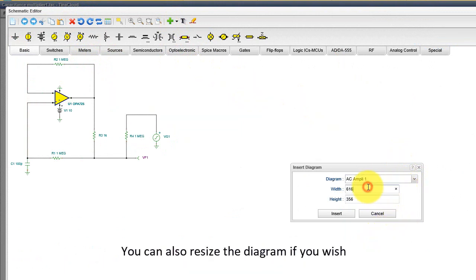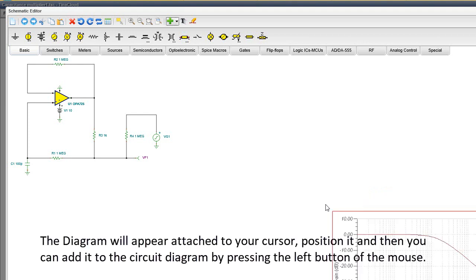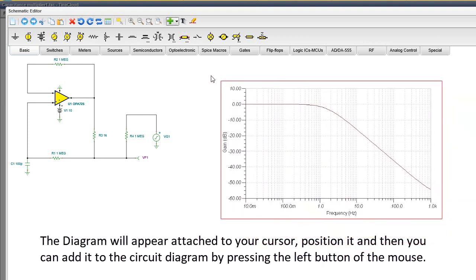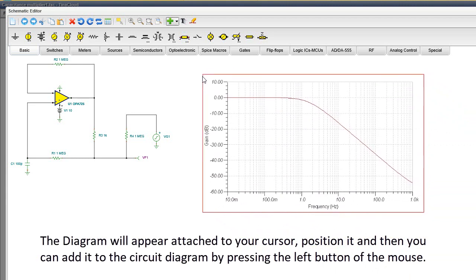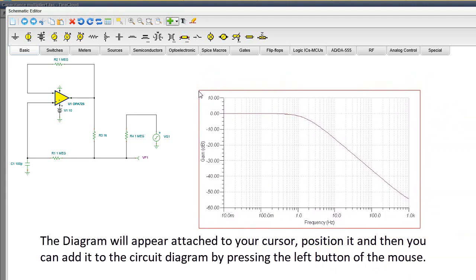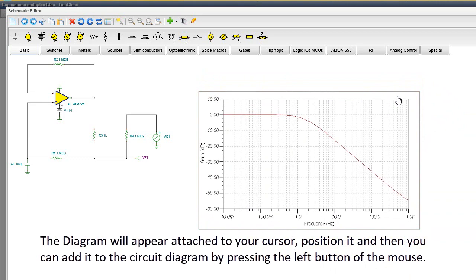You can also resize the diagram if you wish. Click the Insert button. The diagram will appear attached to your cursor. Position it, and then you can add it to the circuit diagram by pressing the left button of the mouse.